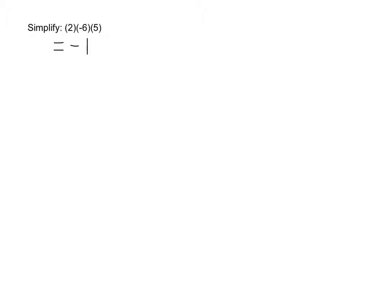Here's my problem — it says simplify 2 times negative 6 times 5. I can start this any way I want to. I'm going to multiply my first two numbers first. 2 times negative 6 is going to get me negative 12 — remember the positive times the negative is negative. Now I have negative 12 times positive 5. I have a negative times a positive, so my answer needs to be negative. My answer is negative 60. The multiplication part doesn't change; you just need to remember if your answer is going to be positive or negative.